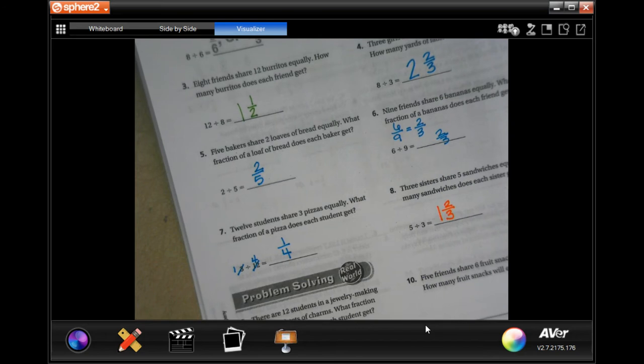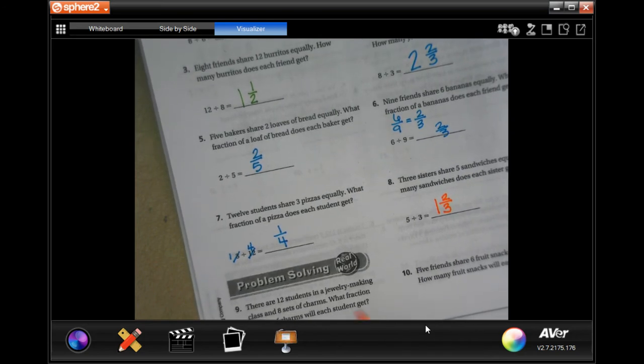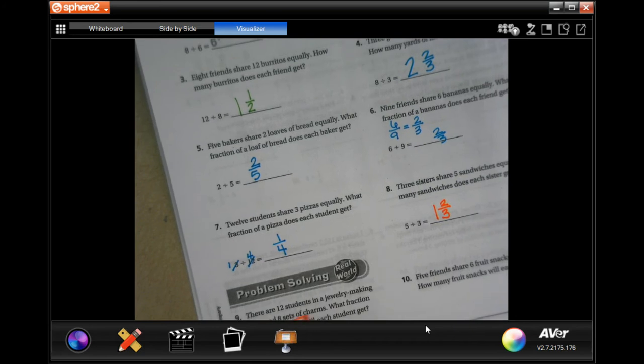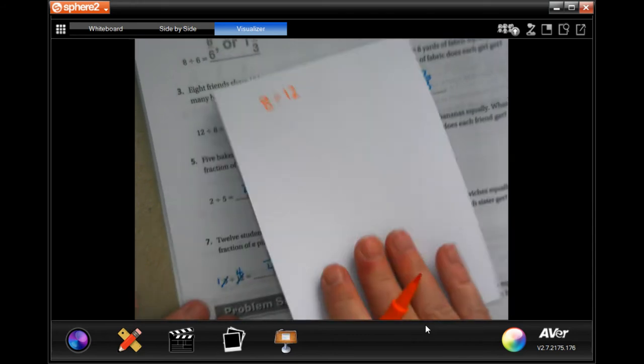So we have eight sets of charms but we have twelve students. So it's going to be eight divided by twelve.